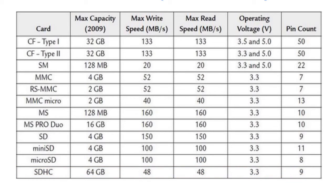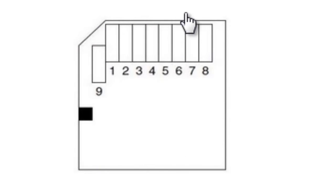The newer SDXC card has a capacity of up to 2TB. Most SD cards and MMC, particularly those below 2GB, use the FAT16 standard, while those between 2GB and 2TB use the FAT32 standard.